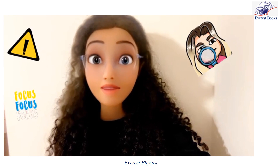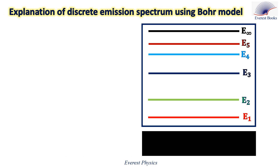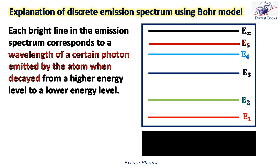Focus, please — this is important. We are going to use the Bohr model in order to explain the existence of the bright lines in the discrete emission spectrum. This is the energy level diagram of a hypothetical atom. Using the Bohr model, we can conclude that each bright line in the emission spectrum corresponds to a wavelength of a certain photon emitted by the atom when it decays from a higher energy level. For example, when the atom makes a downward transition from energy level E3 to E2, it emits a photon of frequency ν₁. When it makes a downward transition from E5 to E3, it emits another photon of frequency ν₂.